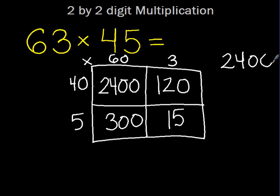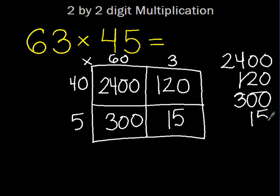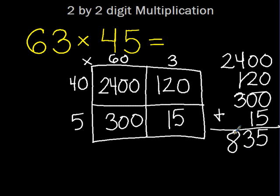What is important when I'm adding my numbers up? That you line them up in the ones column. 0 plus 0 plus 0 plus 0 plus 5 is 5. 0 plus 2 plus 0 plus 1 is 3. 4 plus 1 is 5, plus 3 is 8. So 63 times 45 equals 2,835.